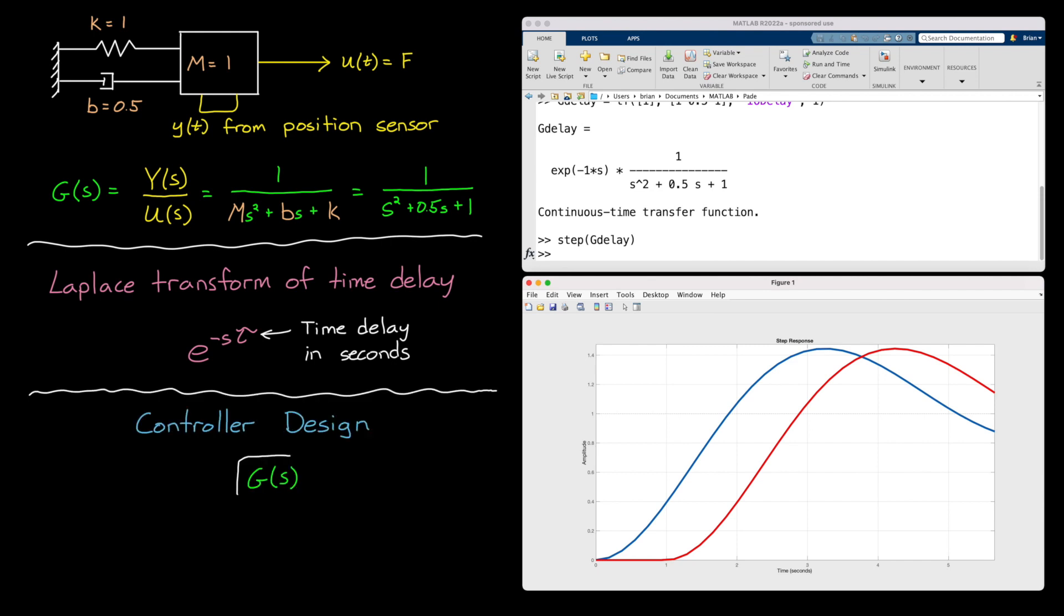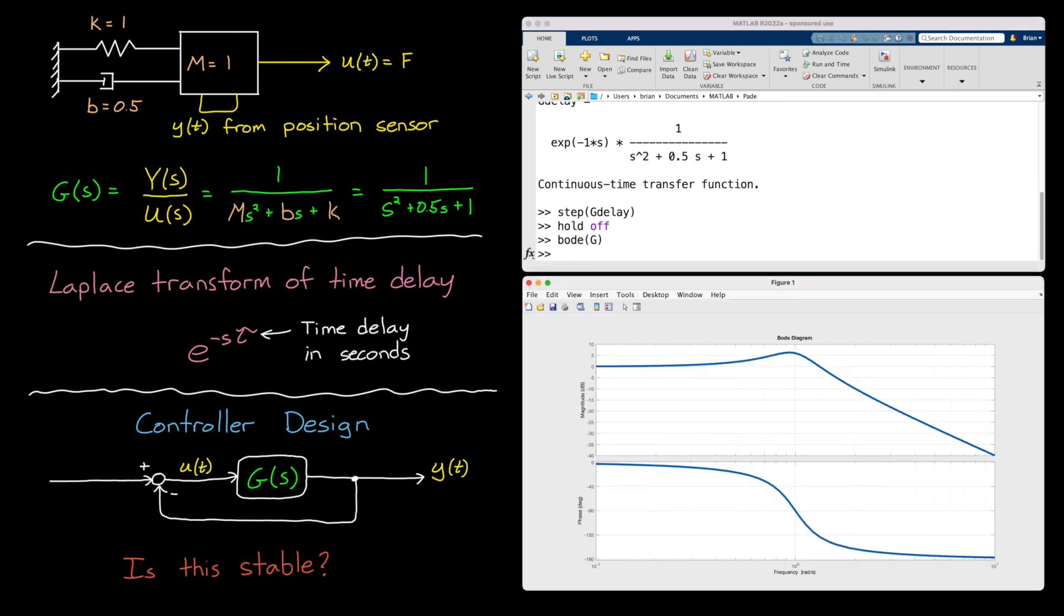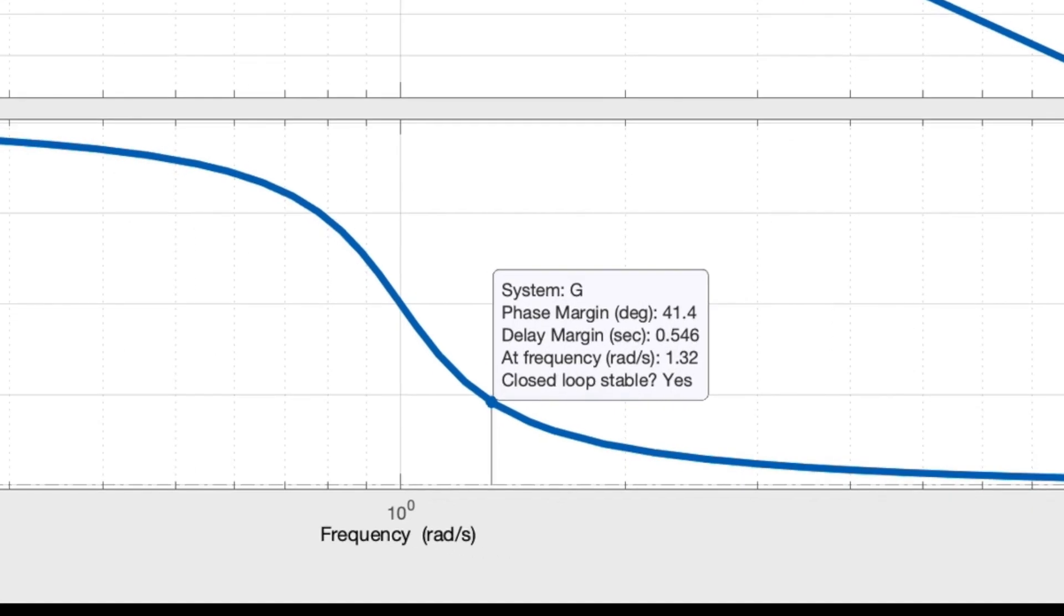For example, let's assess whether a unity feedback controller produces a stable closed loop system. First, let's start with our model that doesn't capture the delay, and then plot the open loop frequency response using a Bode plot. With this plot, we can look at the stability margins. It looks like we have infinite gain margin and about 41 degrees of phase margin, and so it's saying that our closed loop system is stable. Well, at least our model without delay is claiming that it is.